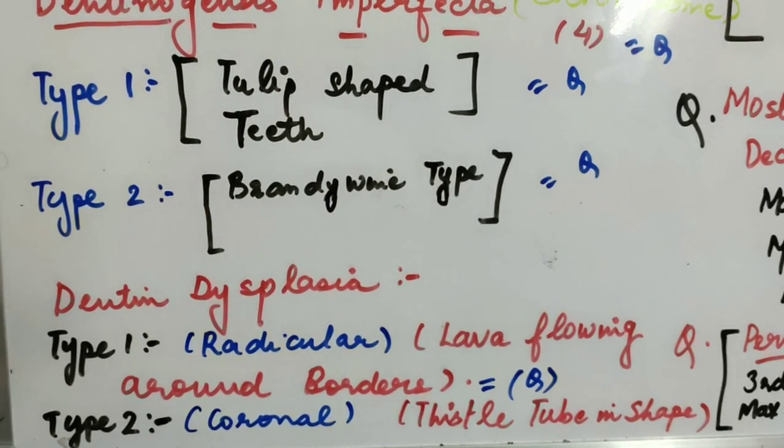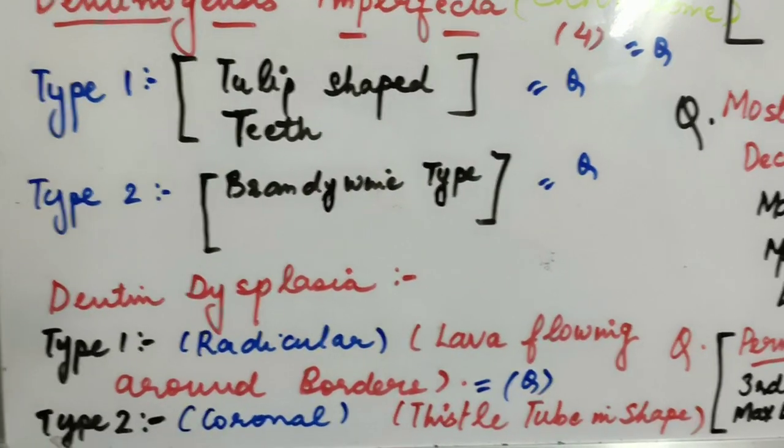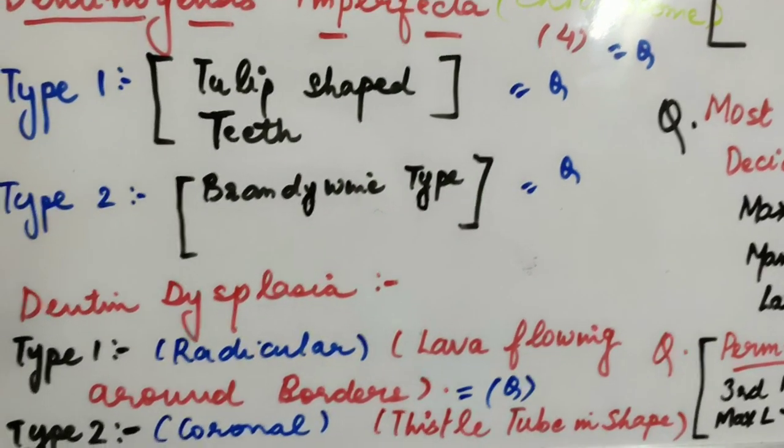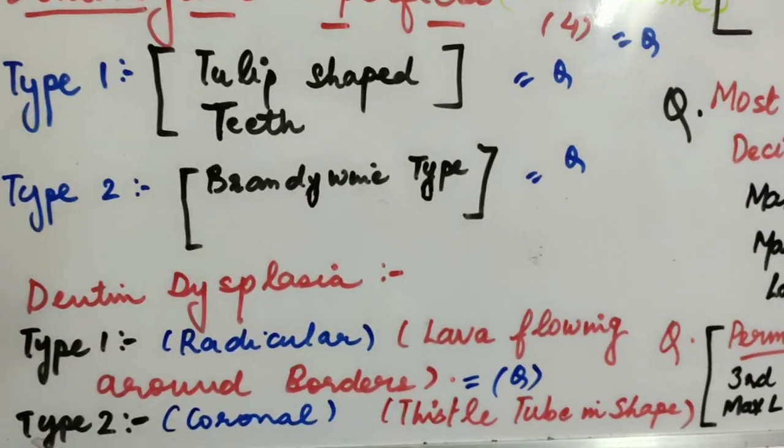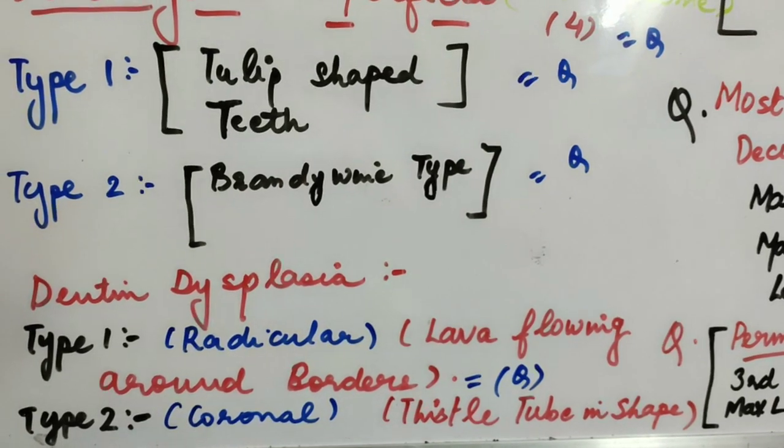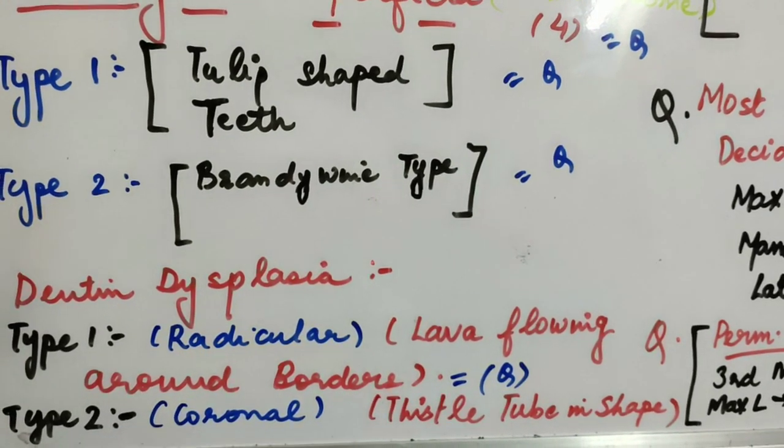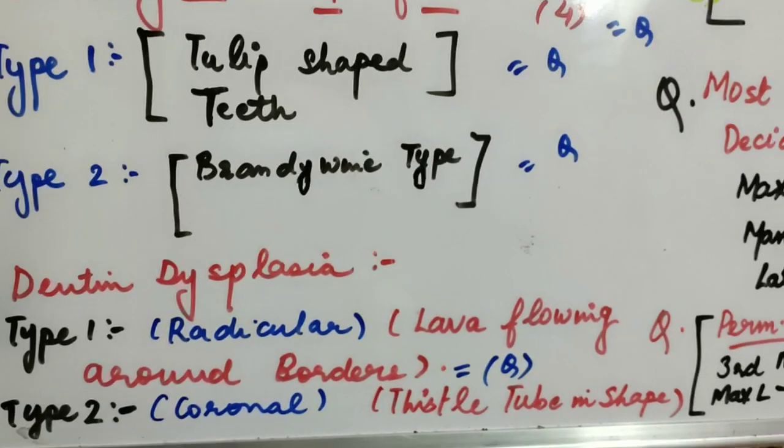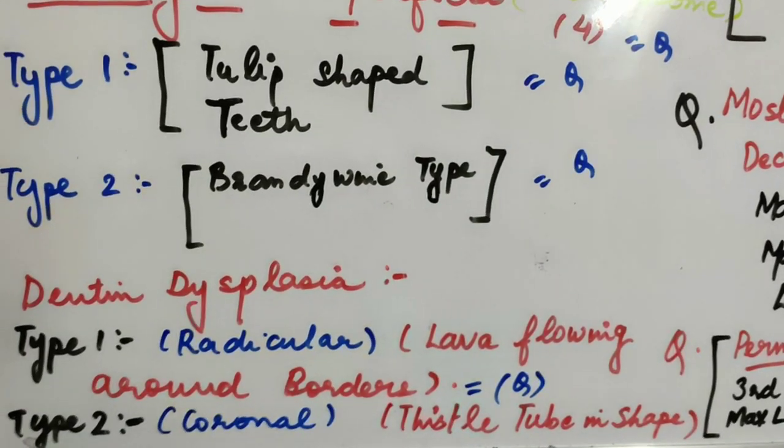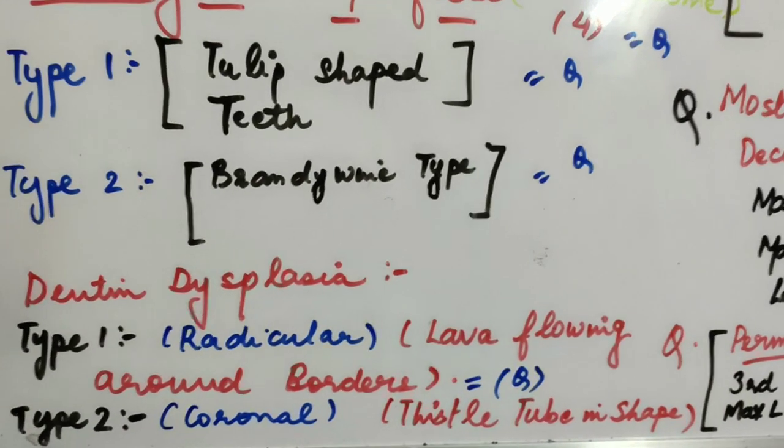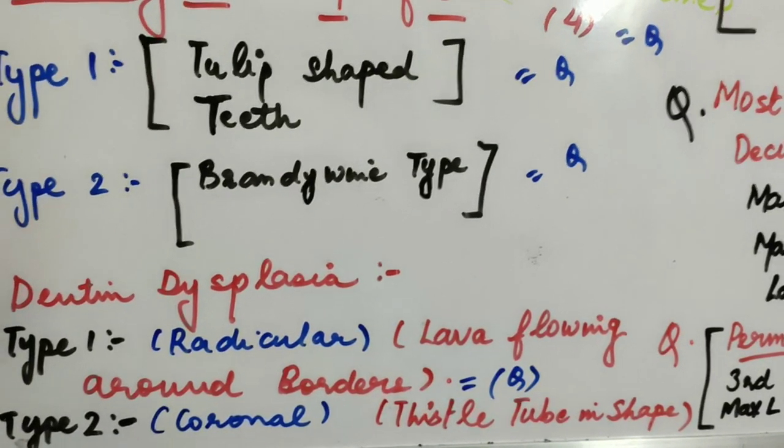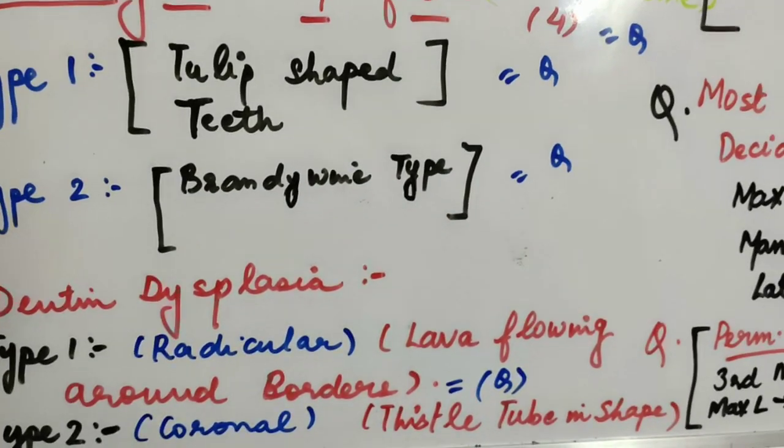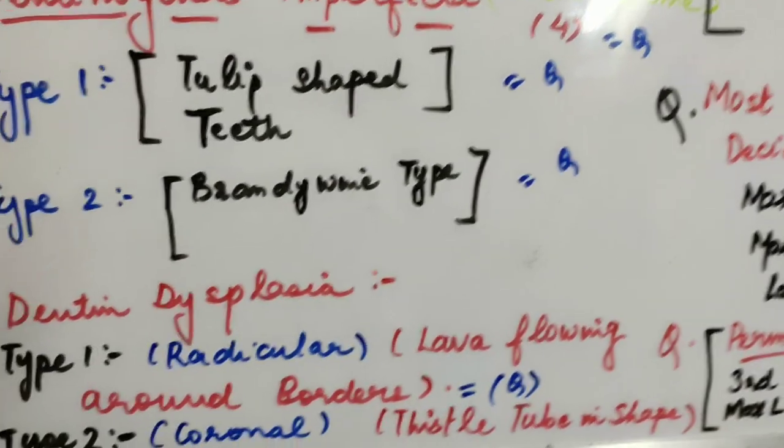Dentin dysplasia also has two types. Type 1 is radicular and type 2 is coronal. In type 1, the question you need to know is the appearance: in type 1, what is seen is lava flowing around borders. Many times this question is seen in your recent papers. In type 2, the thistle tube shape is seen.